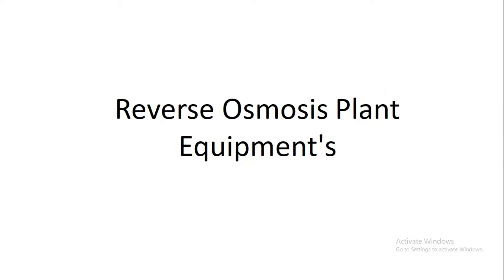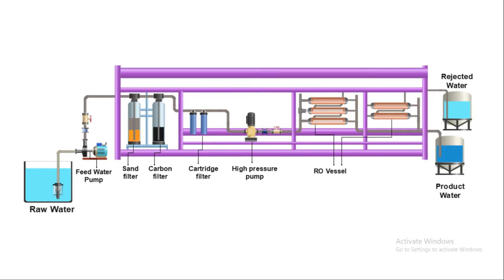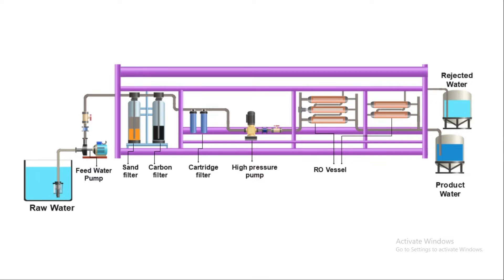Reverse osmosis plant equipment are raw water tank, feed water pump, sand filter, carbon filter, cartridge filter, high pressure pump, RO vessels, reject water tank, and product water tank.